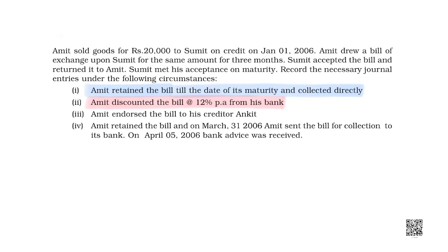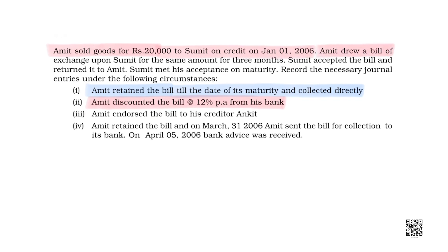You see, Amit sold goods for rupees 20,000 to Sumit on 1st January 2006, and he drew a bill of exchange upon Sumit for the same amount for 3 months. 3 months means January, February and March, so the bill will get matured in April.